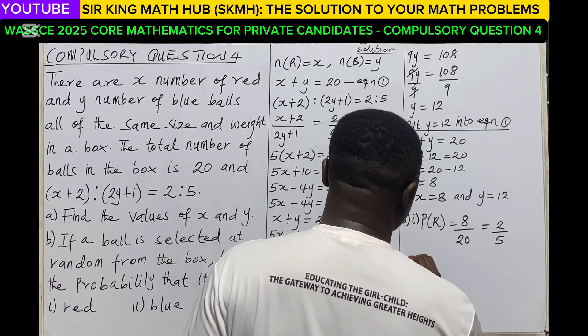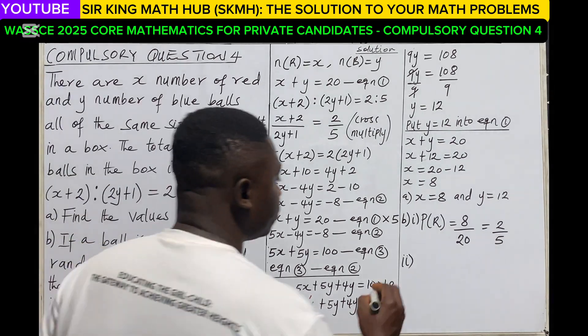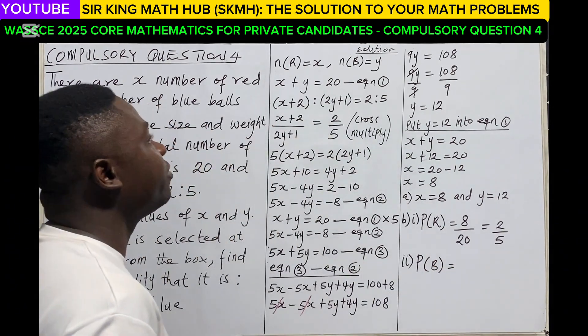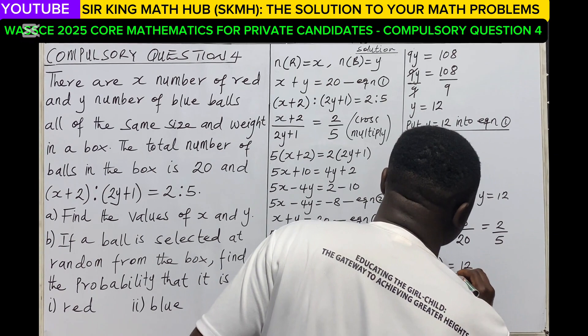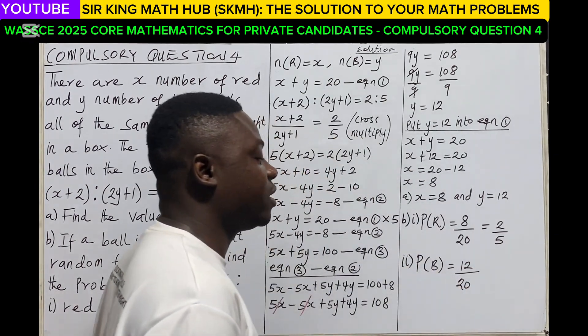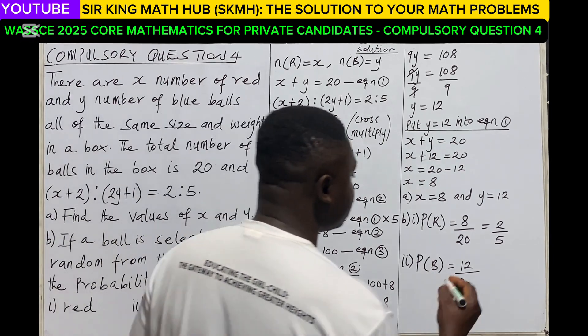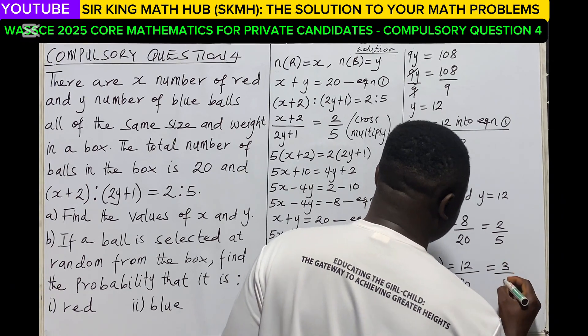For part (ii), we are also to calculate the probability of selecting a blue ball. So the probability of selecting a blue ball will also be the number of blue balls. We represent the number of blue balls as y, and y we have 12, divided by the total number of balls inside the box, which is 20. So 12 out of 20 is also a common fraction, which is not in the lowest form. So 4 goes into 12, that's 3. 4 goes into 20, that's 5. So the probability of blue is 3/5.